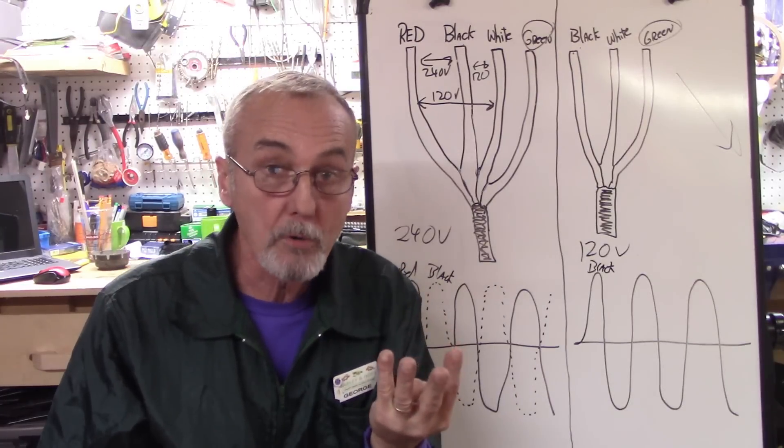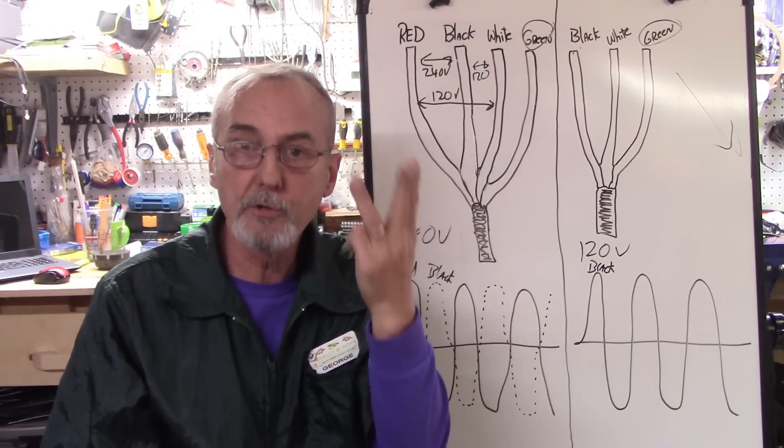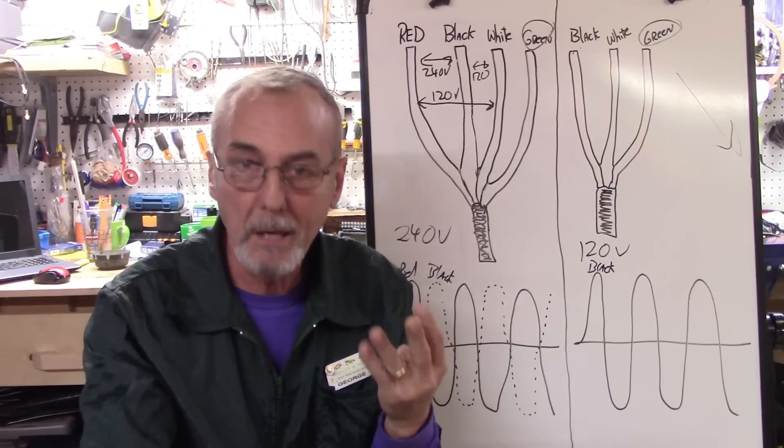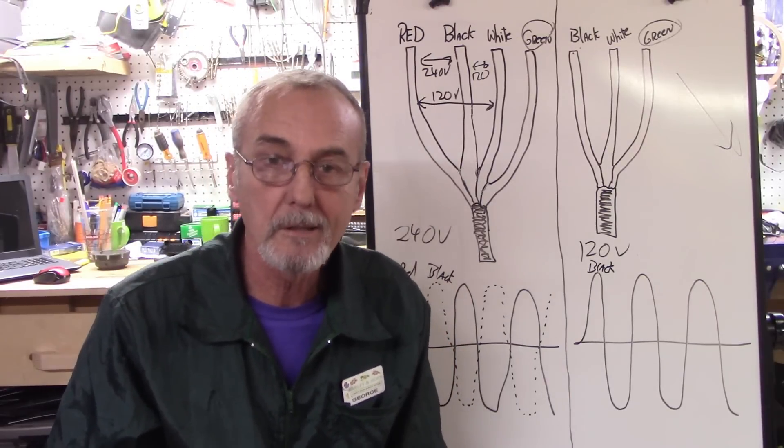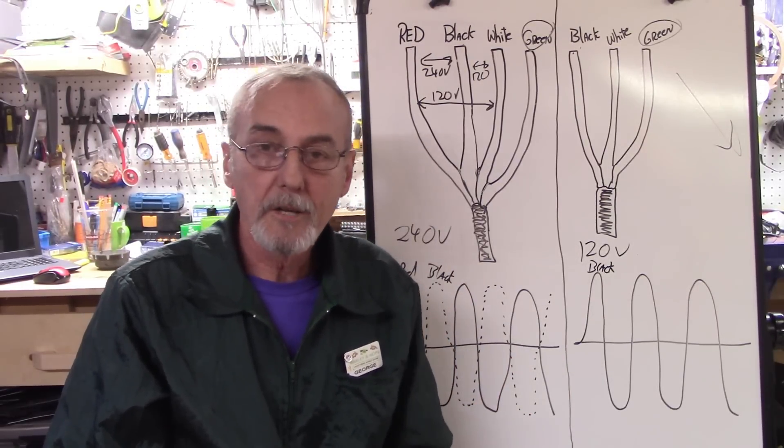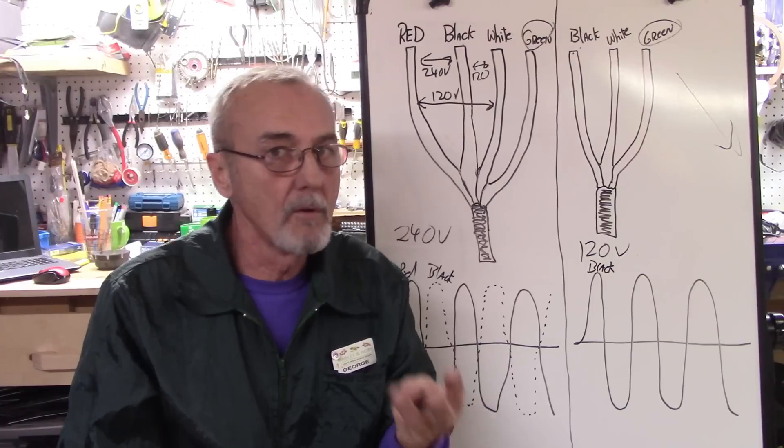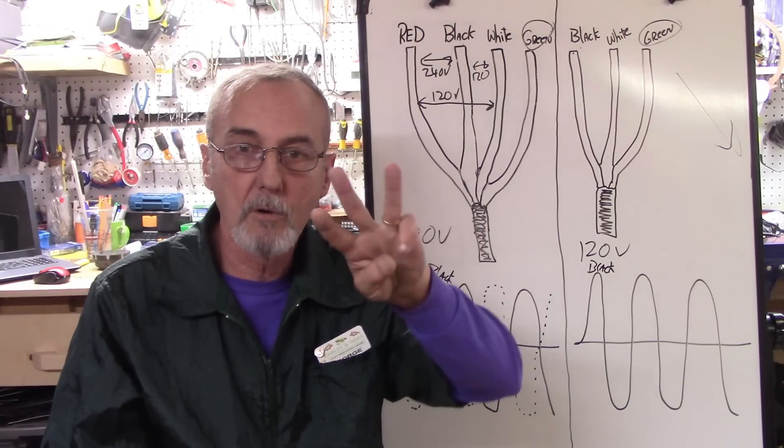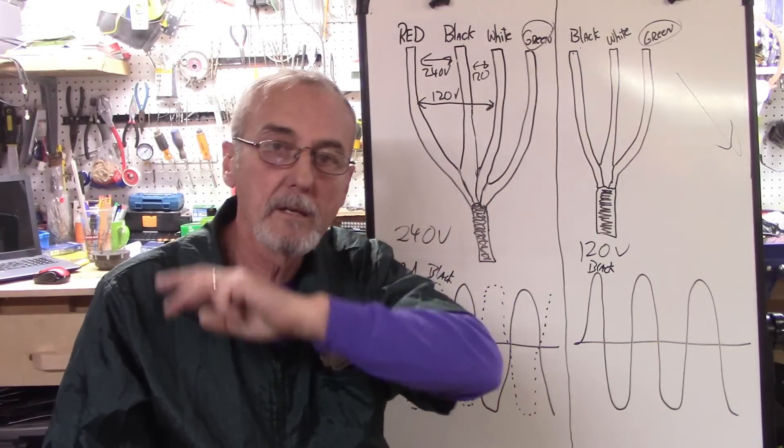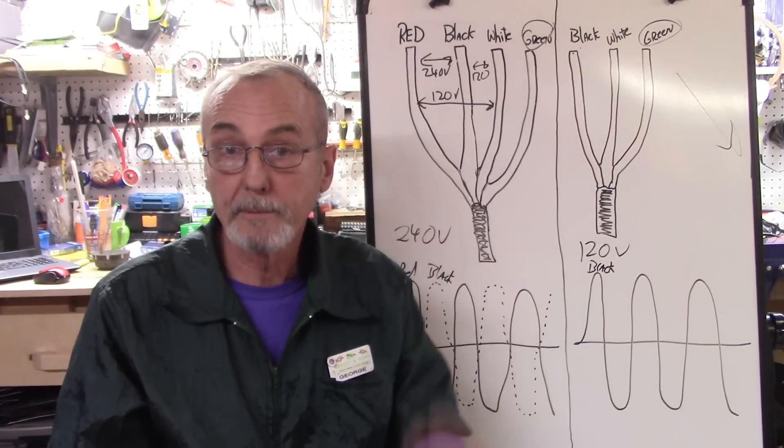You've got a four-prong dryer. That's a hot, a hot, a neutral, and a ground. It's probably because the buzzer works off of 120 volts. You'll have other appliances that will have only a hot, a hot, and a ground. And so that's a 240-volt three-prong or three-wire.